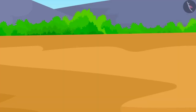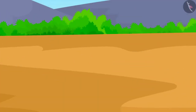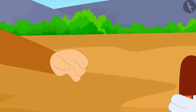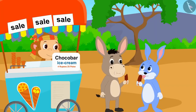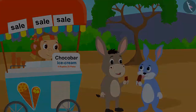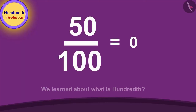Bunny and Bhoola bought one chocobar ice cream each from Babban and happily returned home eating ice cream. Children, in this video we learned about what is hundredth. In the next video we will learn more about it through some interesting examples.